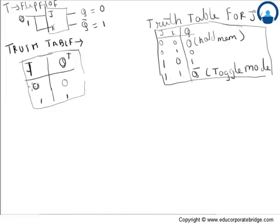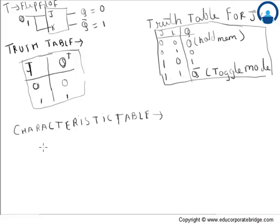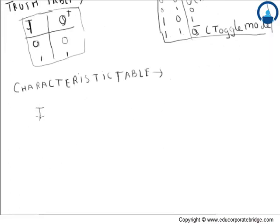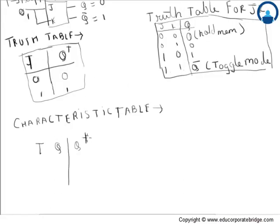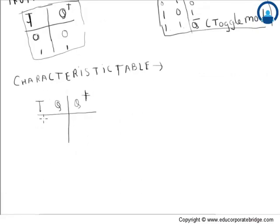Now let's move on to the characteristic table. The characteristic table is a table which has the input of the corresponding flip-flop, the current output Q, and the next stage output Q-plus. In short, it contains the inputs, the current value of the output, and the next value of the output. The characteristic table is derived from the truth table, and it includes T, Q, and Q-plus.